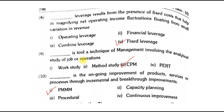The eighth and ninth MCQs: leverage results from the presence of fixed costs that helps in magnifying net operating income fluctuation from small variation in revenue — the answer is fixed leverage. A tool or technique of management involving the analytical study of job operations is CPM. Ongoing improvement of products, services, or processes through incremental and breakthrough improvement is PMMM. So these are all the MCQs that had appeared in the October 2022 paper.